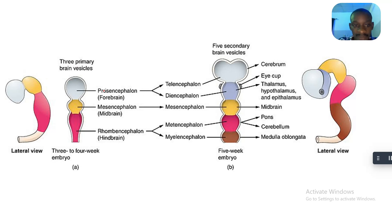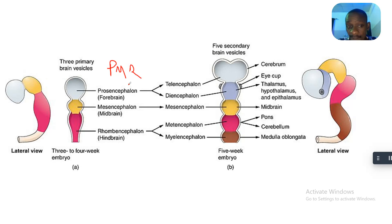These are the primary brain vesicles. We have the memory aid PMR: P is prosencephalon, M is mesencephalon, and R is rhombencephalon.